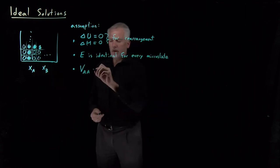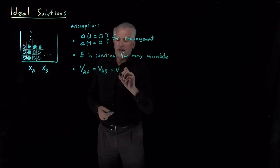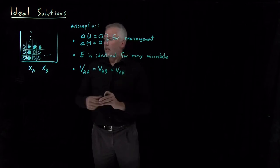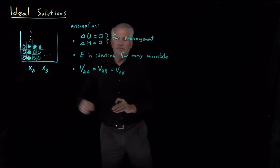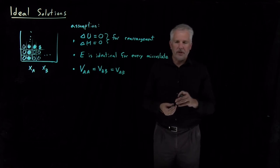what if I require that that is exactly the same as a B-B interaction and is exactly the same as an A-B interaction. If a molecule doesn't care who its neighbors are, it has the same potential energy of interaction if it's surrounded by A molecules or by B molecules